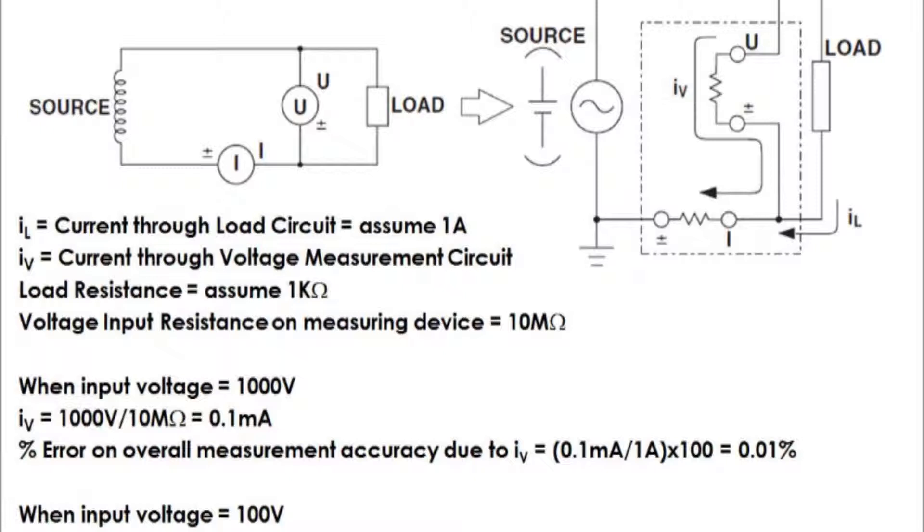Similarly, if the input voltage was 100 volts, IV is 0.01 milliamps and the effect of IV on the overall measurement accuracy is 0.001%. Therefore, when measuring large currents, placing the voltage measurement device as shown in this circuit will minimize the error on the overall current measurements and thereby also minimize the error on the overall measurement accuracy.